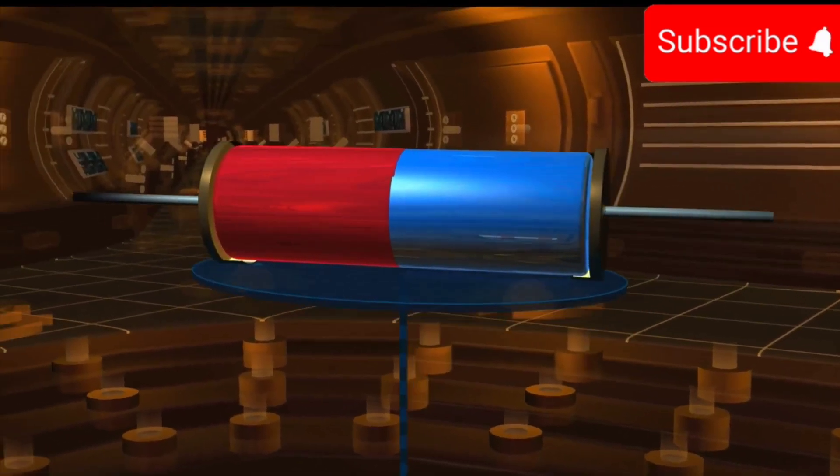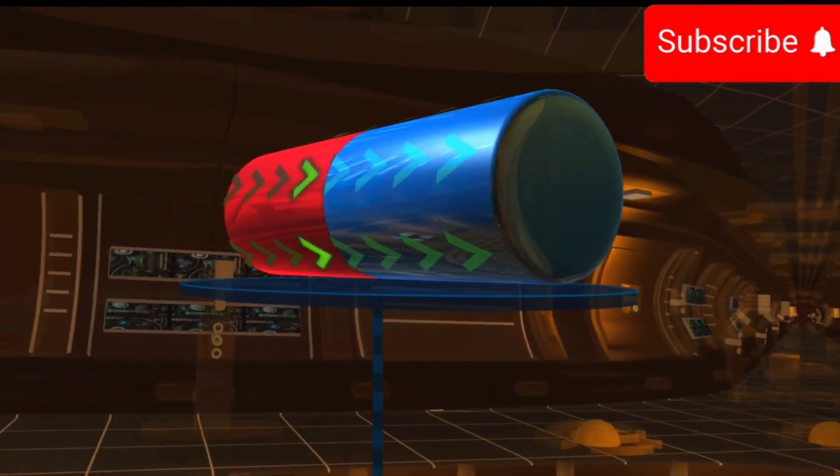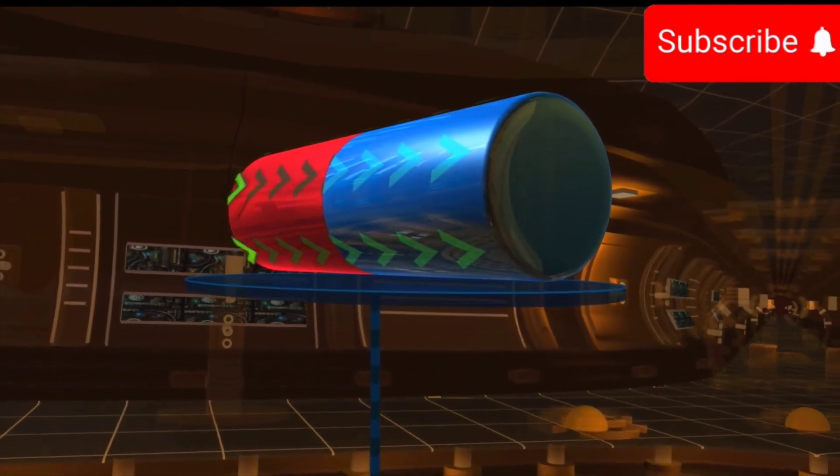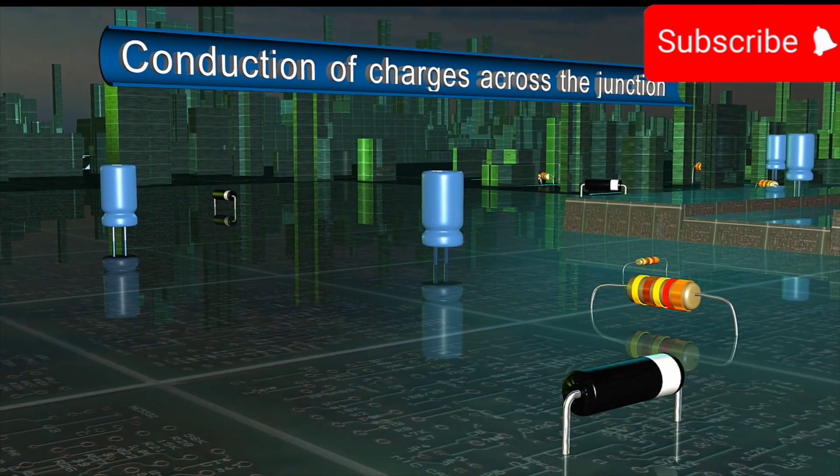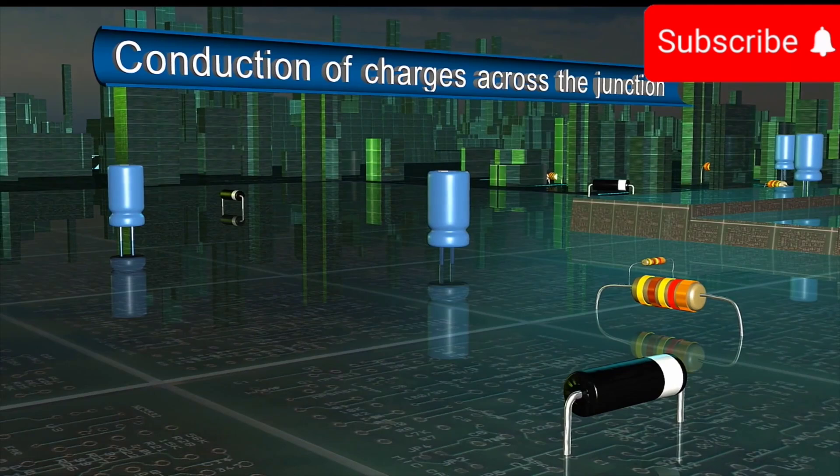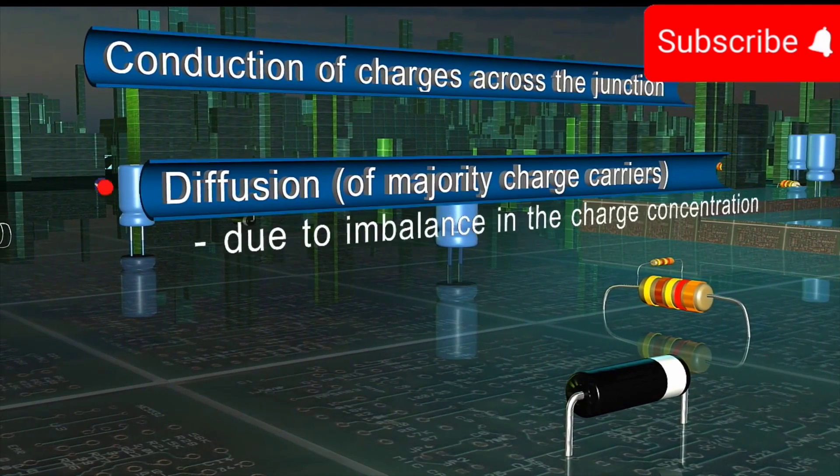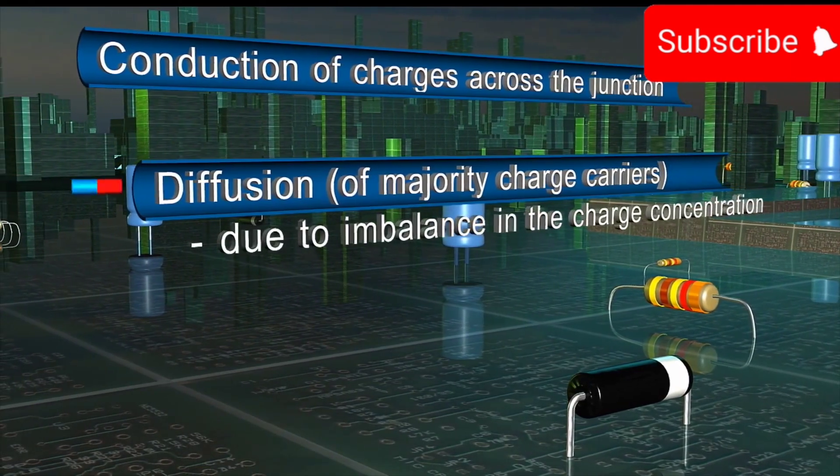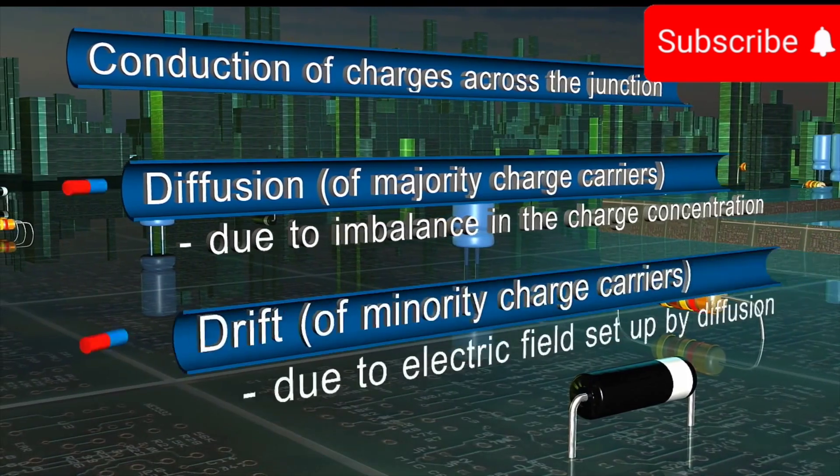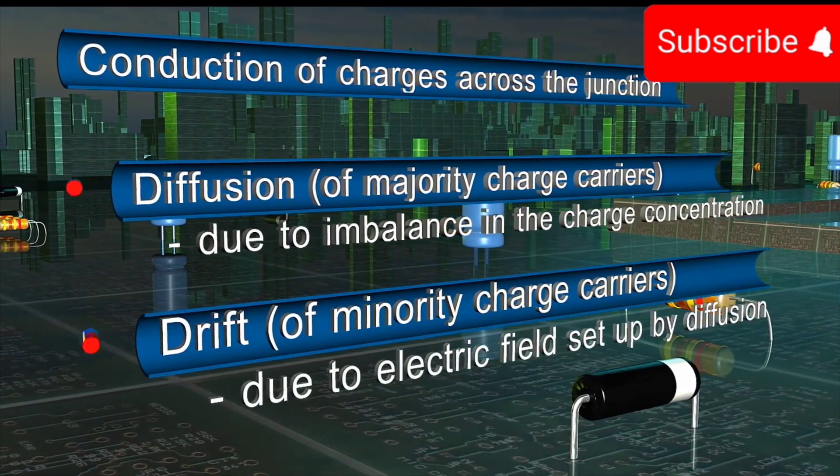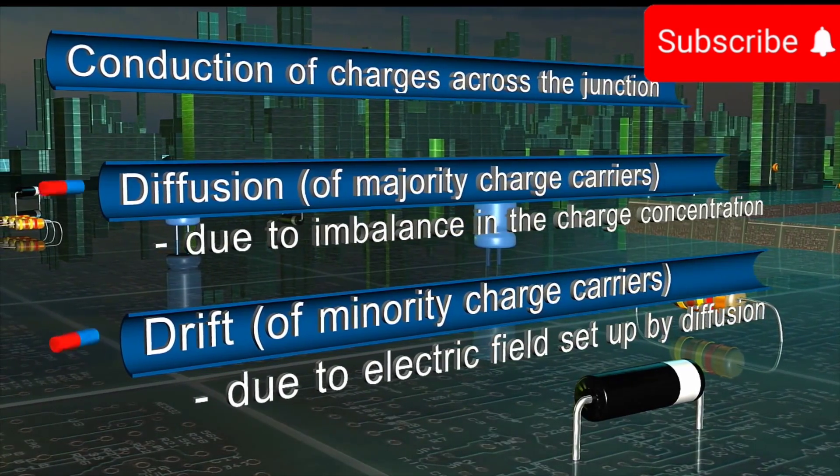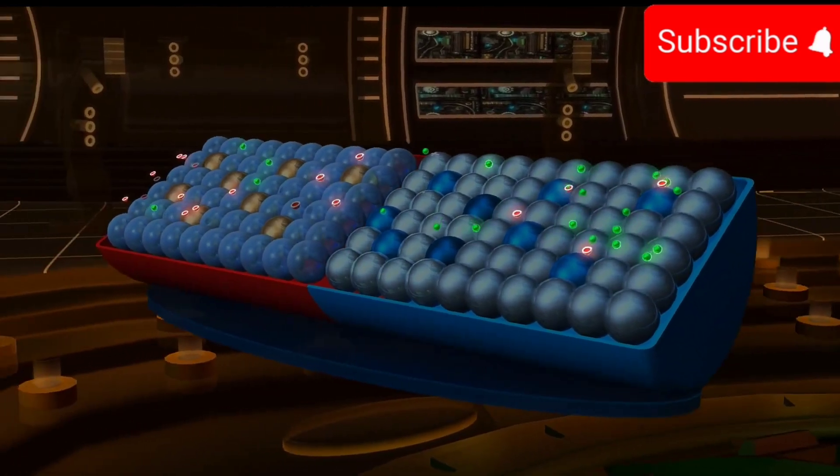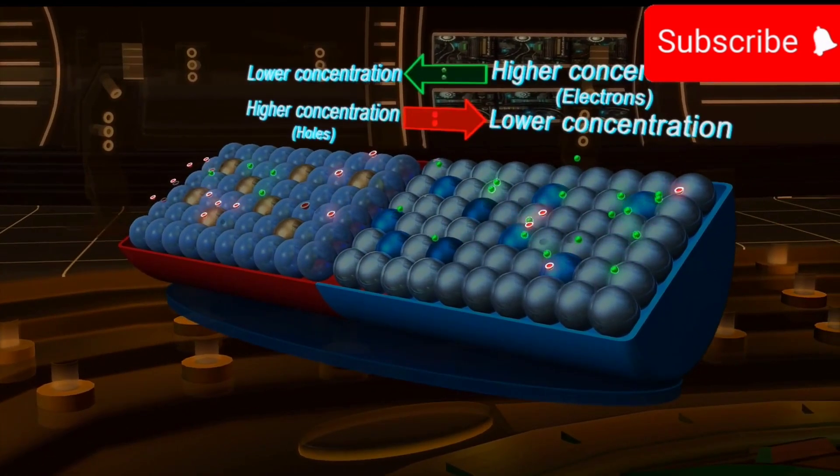To summarize, the diode is a two-terminal semiconductor device which conducts current in only one direction. The conduction of charges across the junction occurs due to two different co-existing mechanisms: 1. Diffusion of majority charge carriers resulting due to the imbalance in the charge concentration. 2. Drift of minority charge carriers resulting due to the electric field set up by diffusion. The majority charge carriers diffuse from the region of higher concentration.